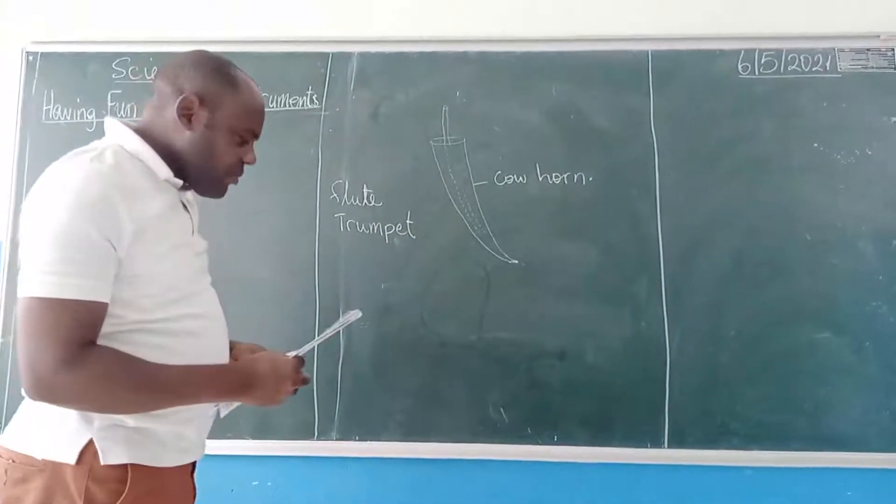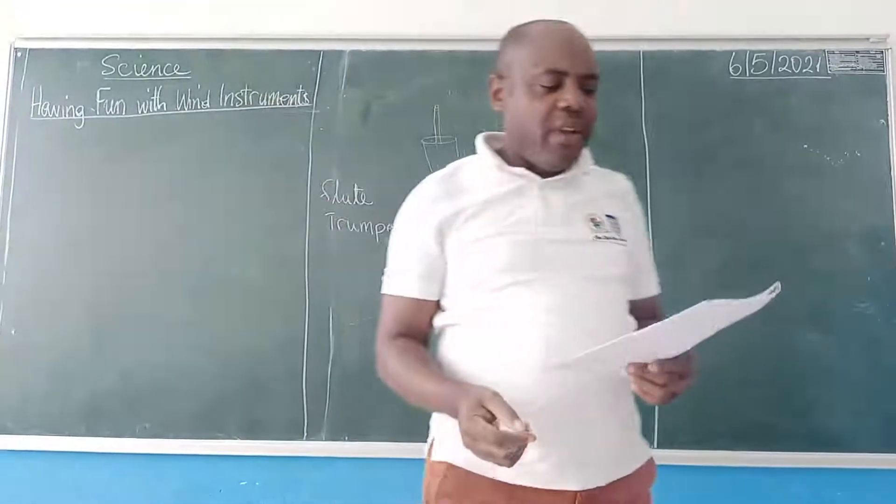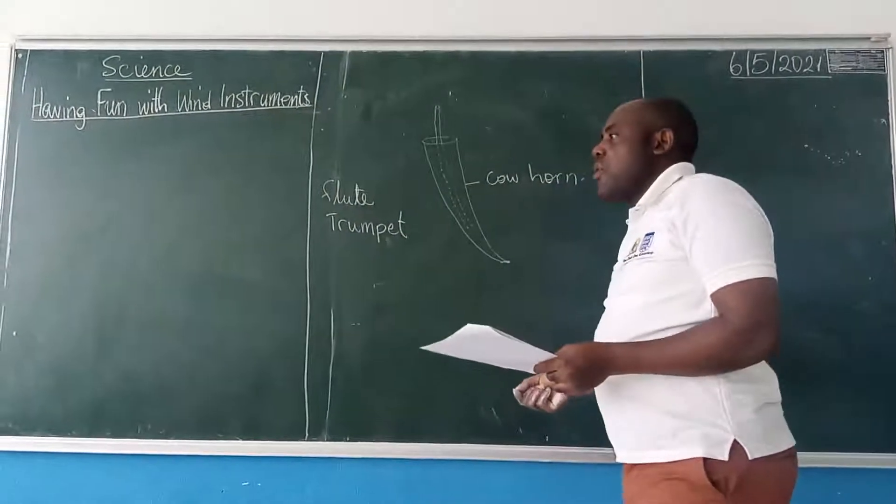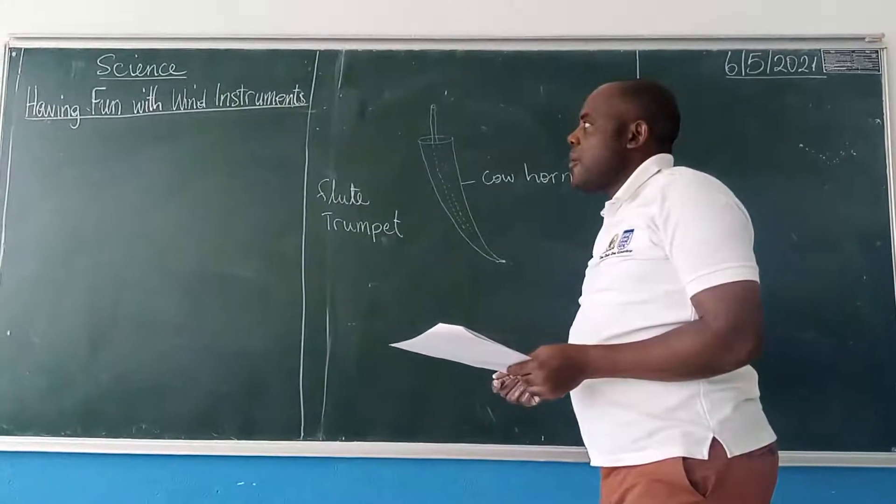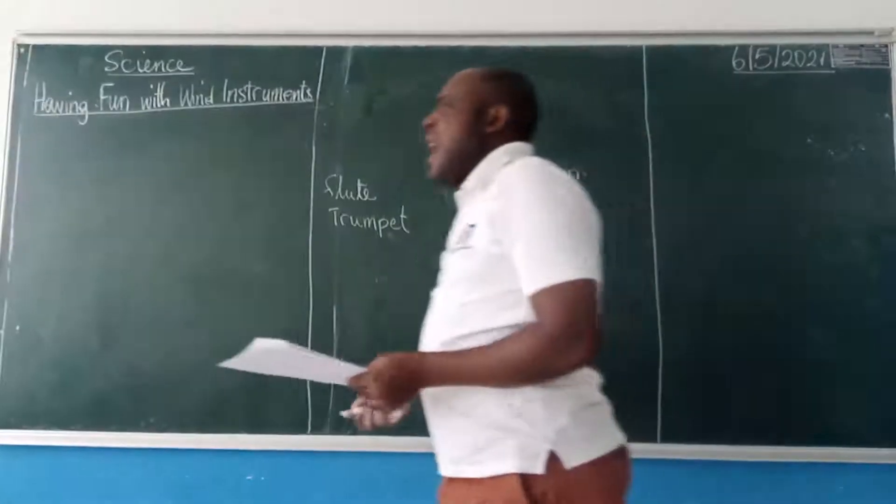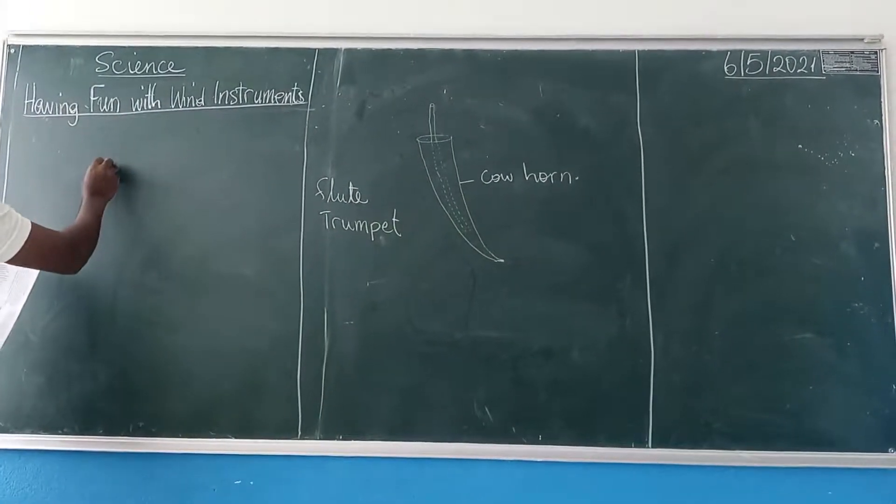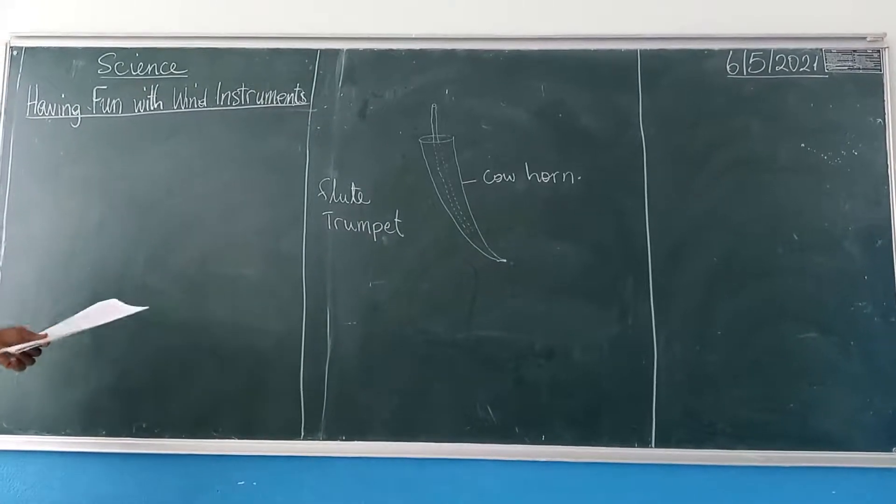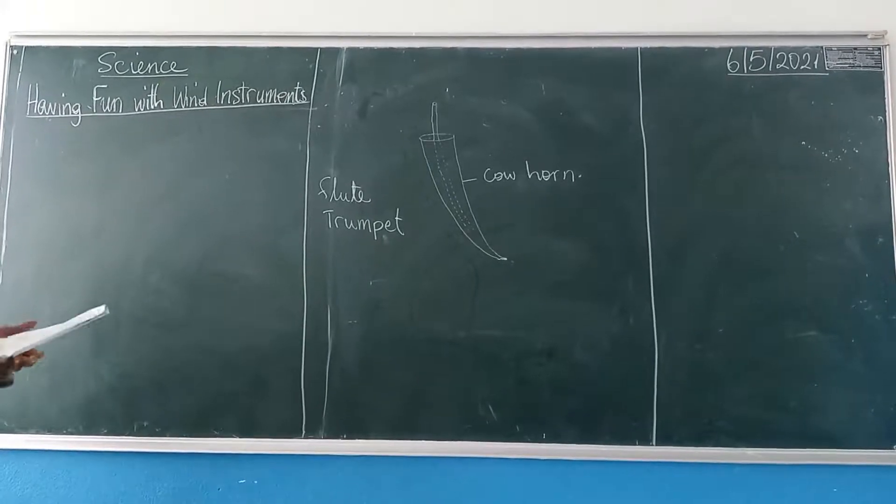Now there are many other wind instruments. When you go to the page of your textbook, you are going to see some of those instruments there. Having fun with them. Now these are instruments that have a hollow pipe. Some of them are wood, some of them are plastic, some of them are maybe metals.